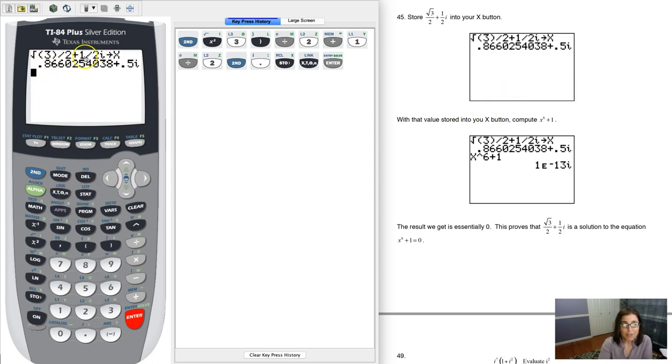So instead of typing this giant binomial with parentheses into my calculator, I can just hit X to the sixth plus 1. And when I do that, you see I get this number which is negative.